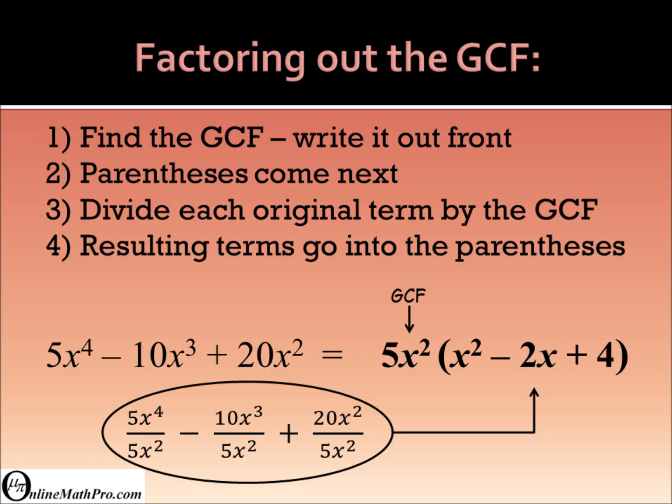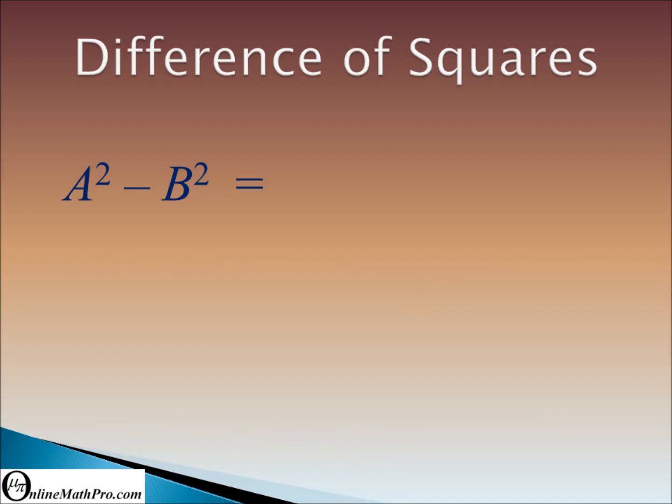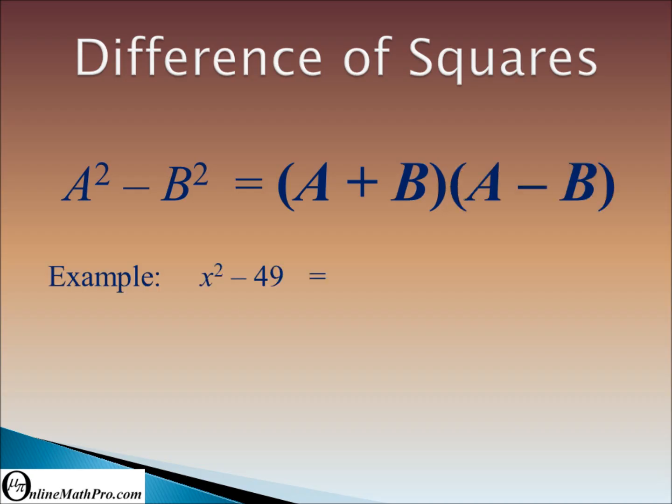Now here's another kind of factoring: difference of squares. A squared minus B squared is A plus B times A minus B. Difference of squares: A squared minus B squared is A plus B times A minus B.